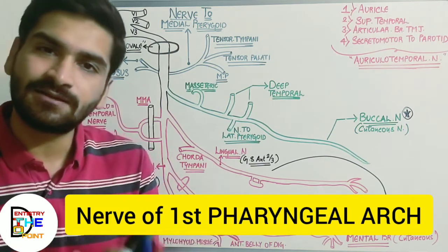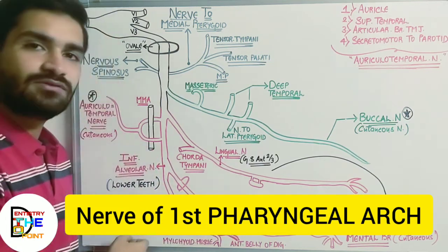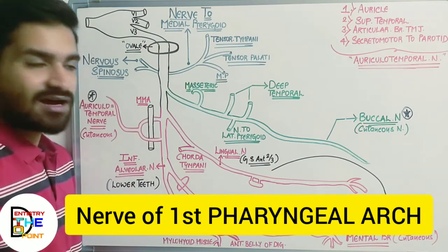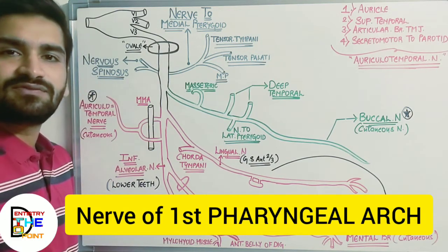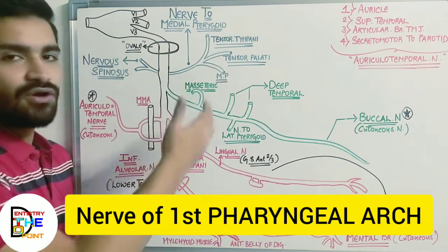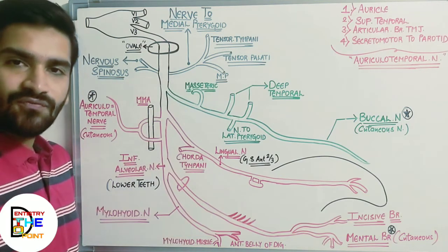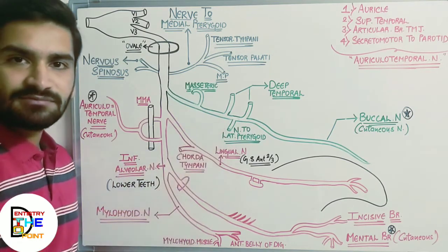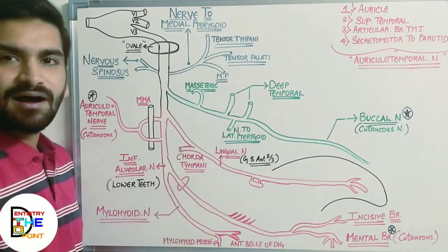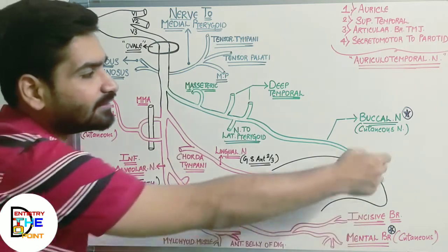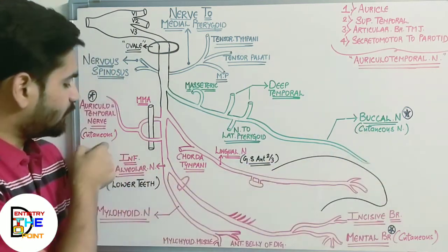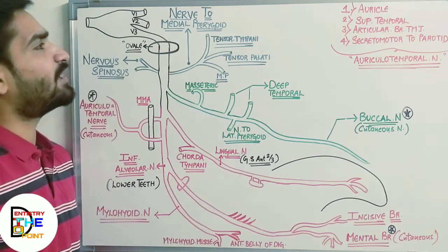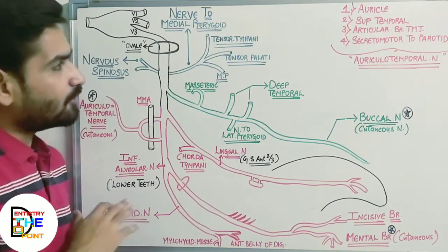The mandibular nerve is the branch of the first pharyngeal arch, so it supplies all the derivatives of the first pharyngeal arch. This is a common MCQ topic — the mandibular nerve is the nerve of the first pharyngeal arch. Also remember the three cutaneous branches using the mnemonic BAM: buccal nerve, auriculotemporal nerve, and mental nerve.